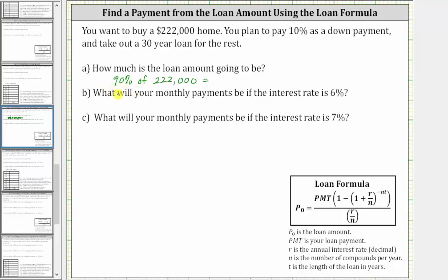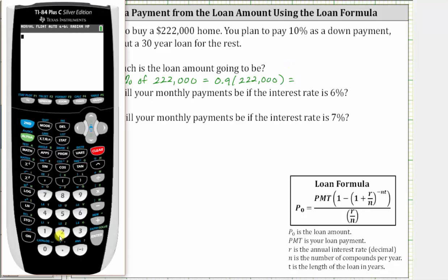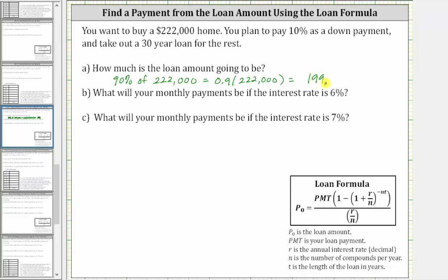90% as a decimal is 0.90 or just 0.9, giving us 0.9 times 222,000. And now let's go to the calculator. 0.9 times 222,000 is 199,800.